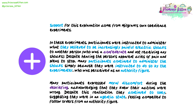Support for this explanation comes from Milgram's own obedience experiments. In these experiments, participants were instructed to administer what they believed to be increasingly painful electric shocks to another person, who was a confederate and not receiving any shocks. Despite hearing the person's apparent cries of pain and pleas to stop, many participants continued to administer the shocks simply because they were instructed to do so by the experimenter, who was perceived as an authority figure.